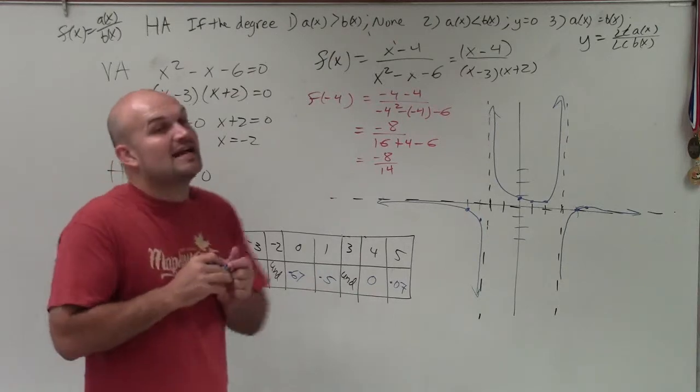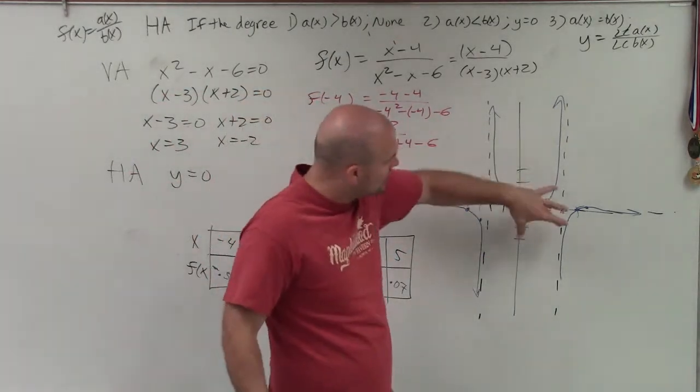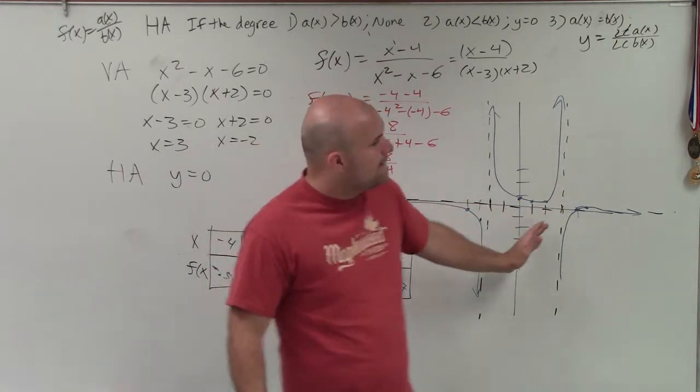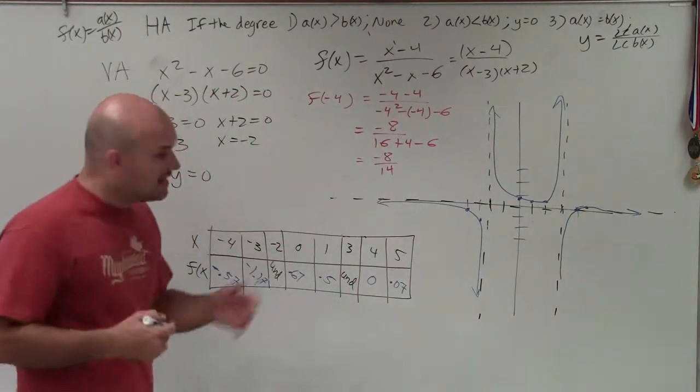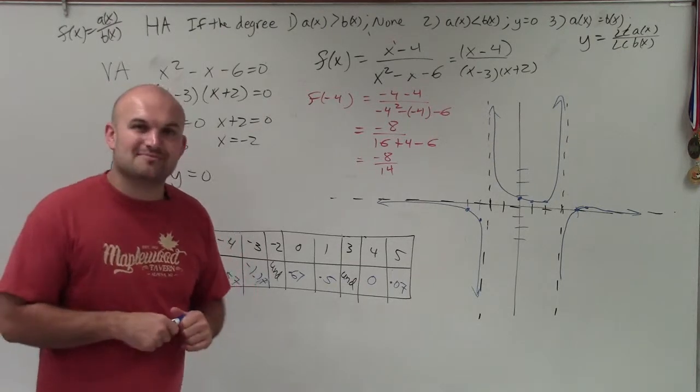So remember, when creating vertical asymptotes, that is where your graph is going to approach. It's never going to cross your vertical asymptotes. It is possible to intercept the horizontal asymptote, but it's still going to approach it at the end. So there you go, ladies and gentlemen. That is how you graph a rational function, as well as determine the vertical and horizontal asymptotes. Thanks.